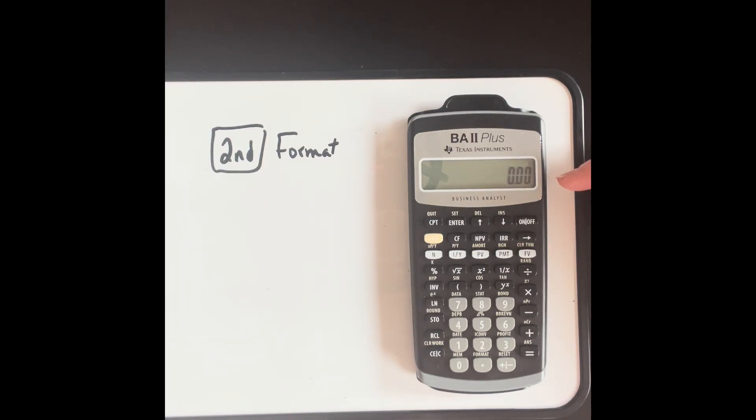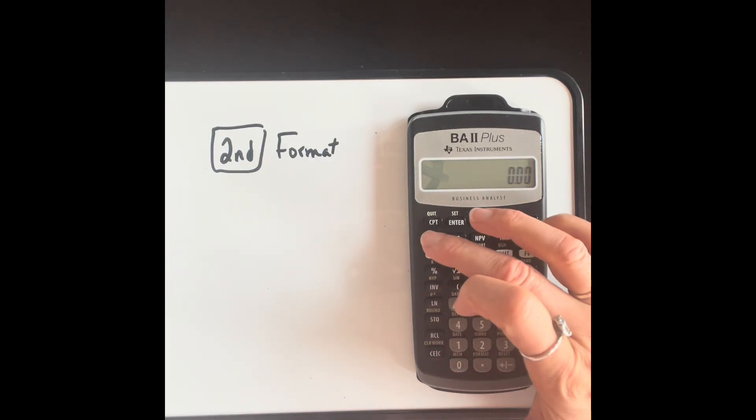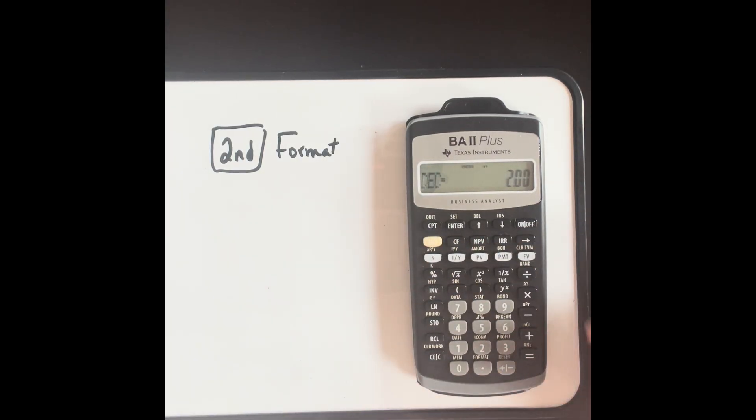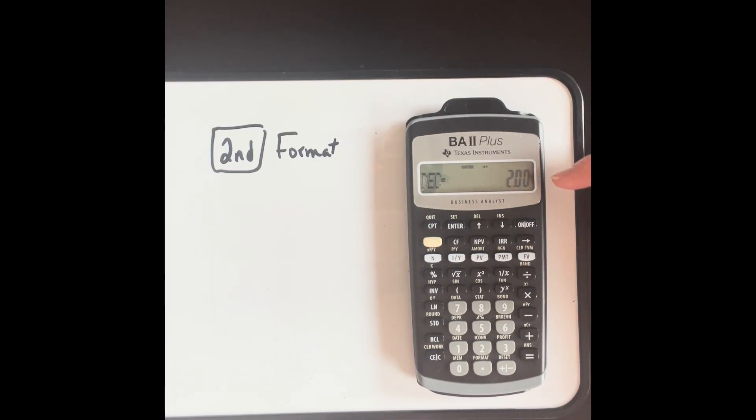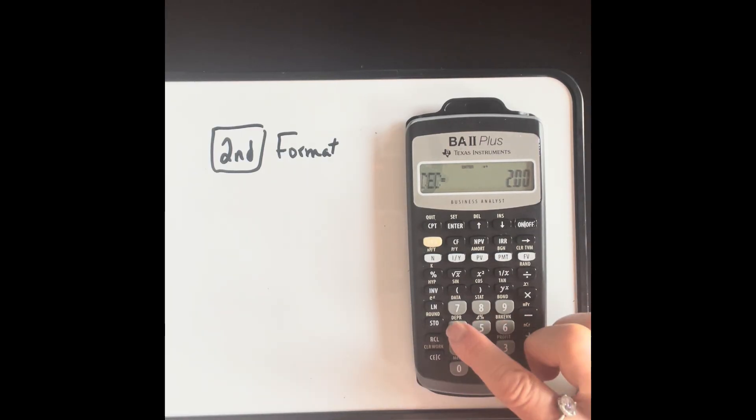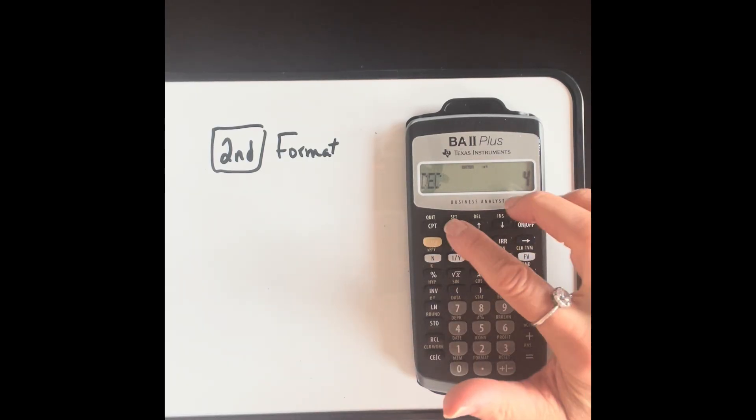If we want to change that or any other format settings, we're going to use the function second and format. Second and format, and the first thing that it tells you is the number of decimal places. You can see that the default is two. I can change that to any number. For example, I could set it to four, and then we press enter.